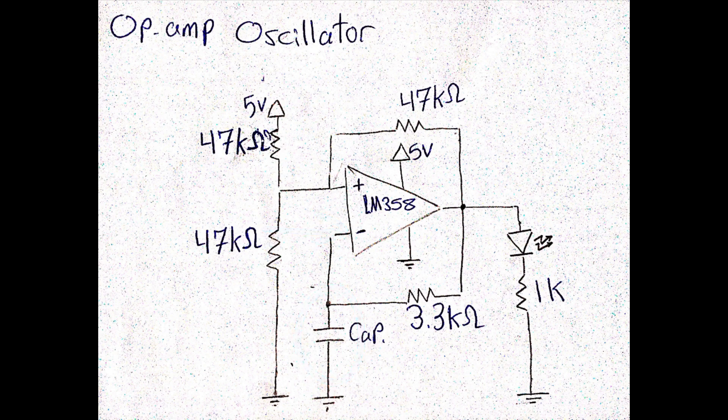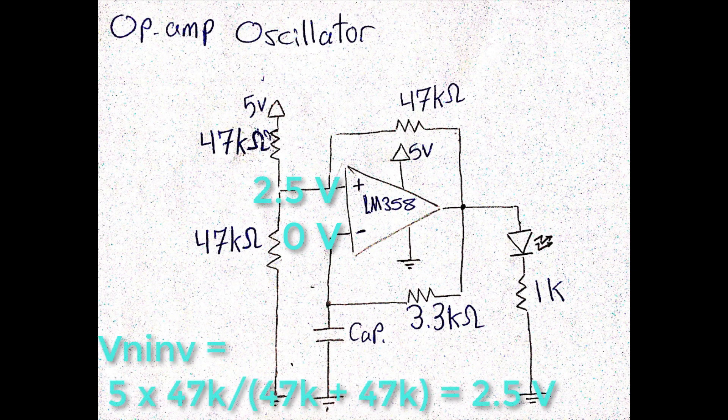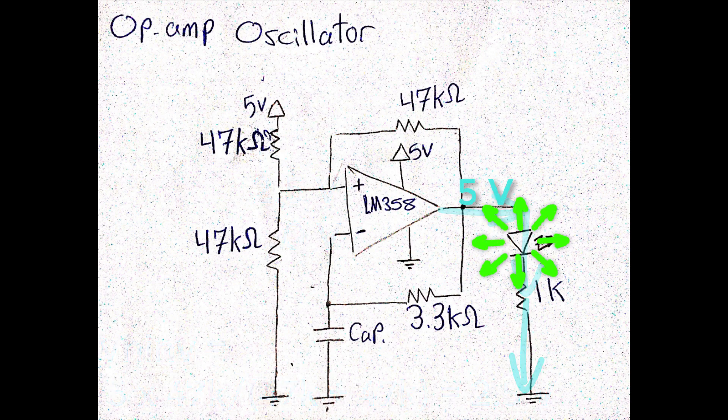At the initial state, the capacitor is discharged, so the voltage at the inverting input is 0V, while the voltage at the non-inverting input is 2.5V due to the voltage divider. From the comparator rule, since the non-inverting input voltage is higher than the inverting input voltage, the output will be pulled to 5V, which will turn on the LED.